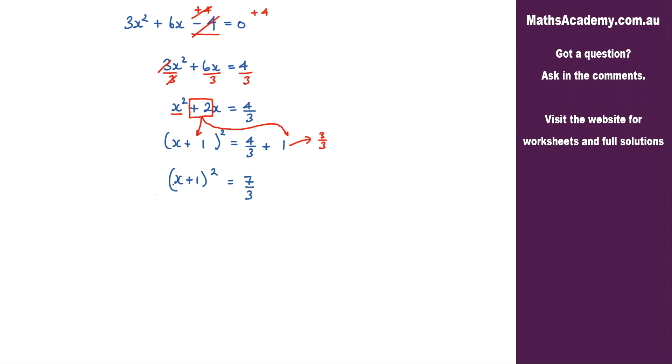The next step is to get rid of this square term here. And to do that I'm going to take the square root on the left and therefore I must take the square root on the right. Now the important thing to consider here and to remember is that we have to have a plus and minus here.